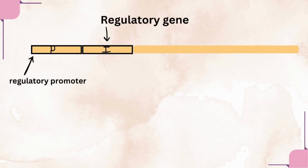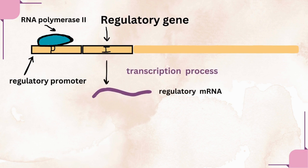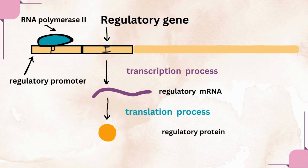Now let's discuss the regulatory gene. To initiate the transcription of any gene, a promoter is required. Similarly, the regulatory gene also has its own promoter. When RNA polymerase binds to the promoter of the regulatory gene, transcription of the regulatory gene gets initiated, resulting in the formation of regulatory mRNA. This regulatory mRNA undergoes translation and results in the formation of a regulatory protein. The regulatory protein can either be an activator or a repressor.